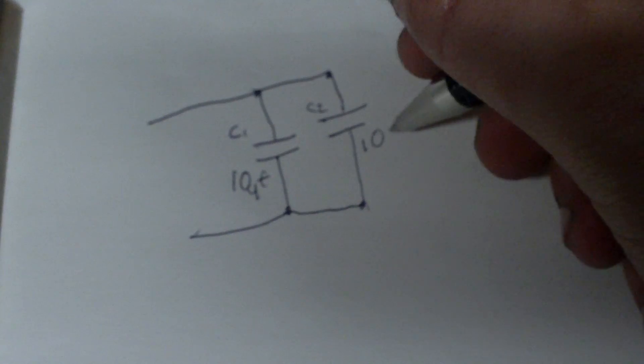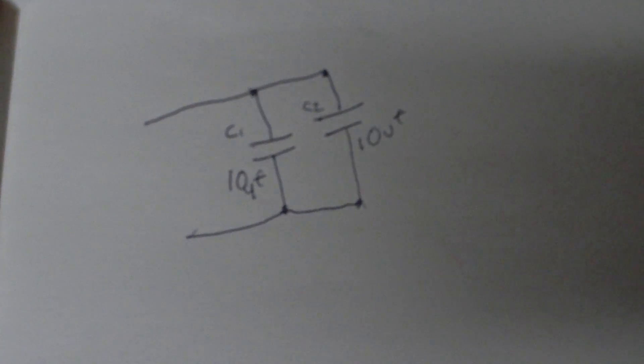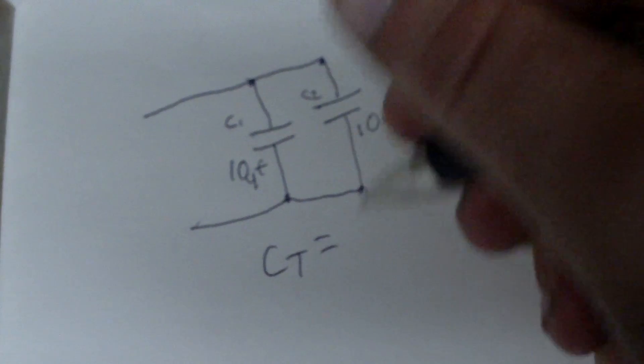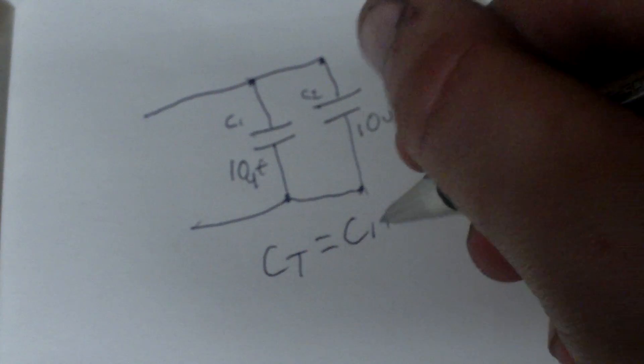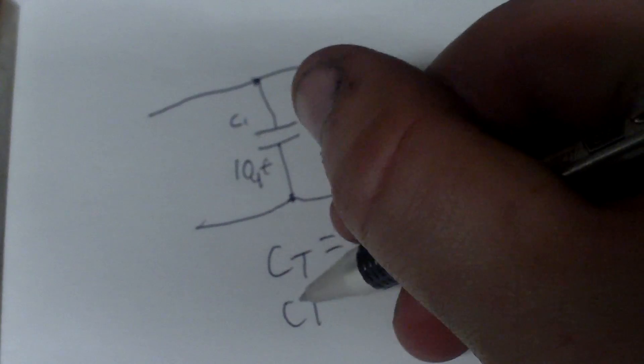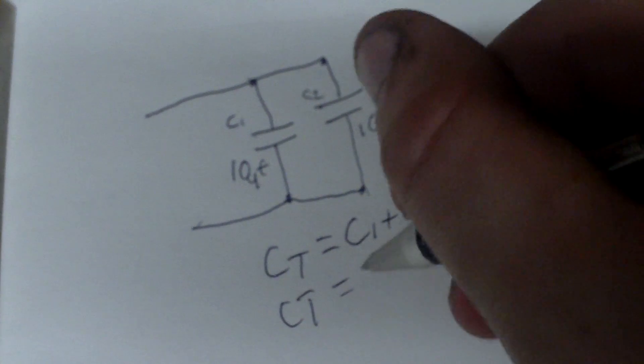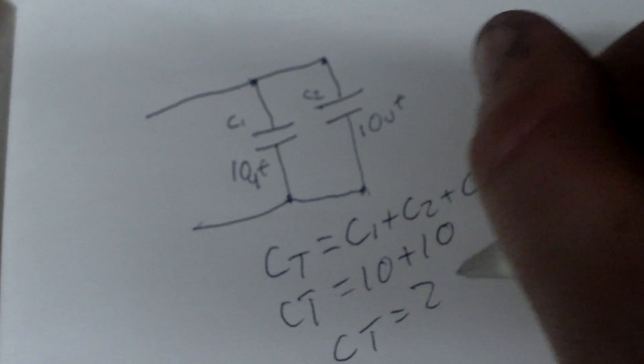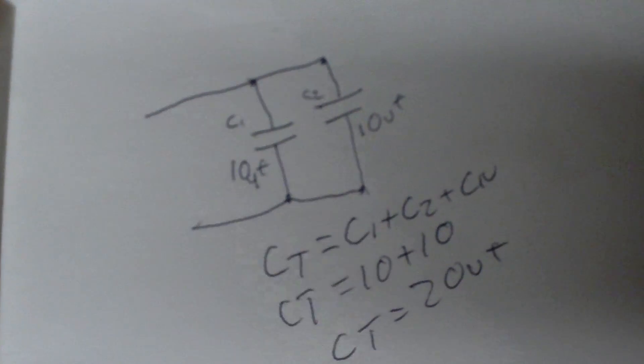Anyways, suppose this one's 10 microfarad. μF stands for microfarad, that's your symbol for it. Now, in parallel, they add: C total equals C1 plus C2 plus any other ones you got. So, C total equals 10 plus 10, so C total equals 20 microfarads.